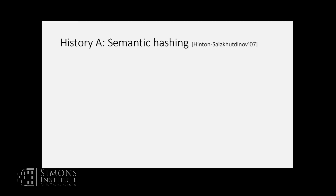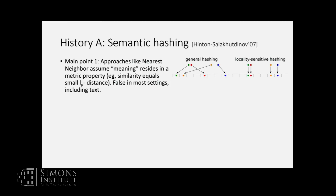Semantic hashing — this paper had a very big conceptual impact on me when I saw it about five years ago. It's by Hinton and Salakhutdinov. Hinton is, of course, the leader of the recent wave of deep learning work. The paper made two main points, some of which I only understood in retrospect.